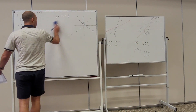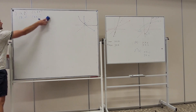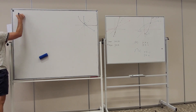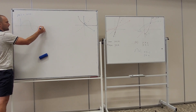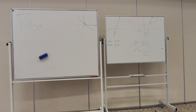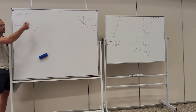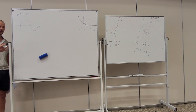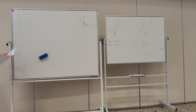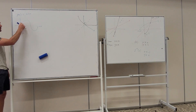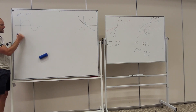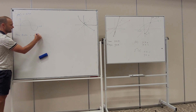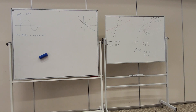Our last question: consider the function m of x equals sine of x. Sine of x is periodic and keeps repeating. It passes the vertical line test but it doesn't pass the horizontal line test — a y value of one half has multiple x values. So this function is many-to-one, and a many-to-one function will not have an inverse.